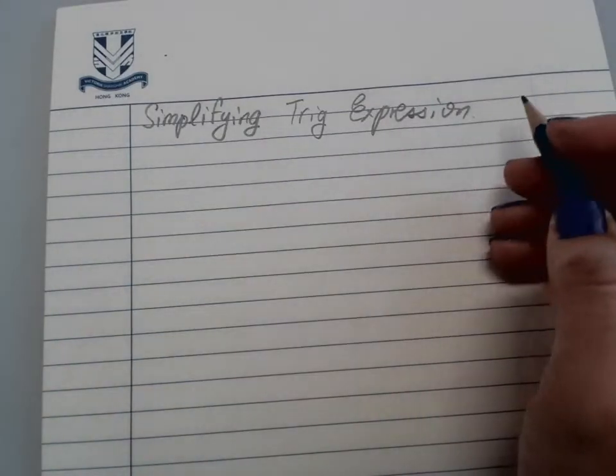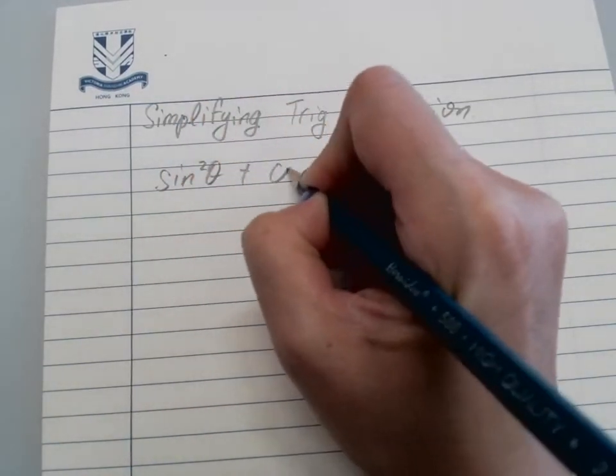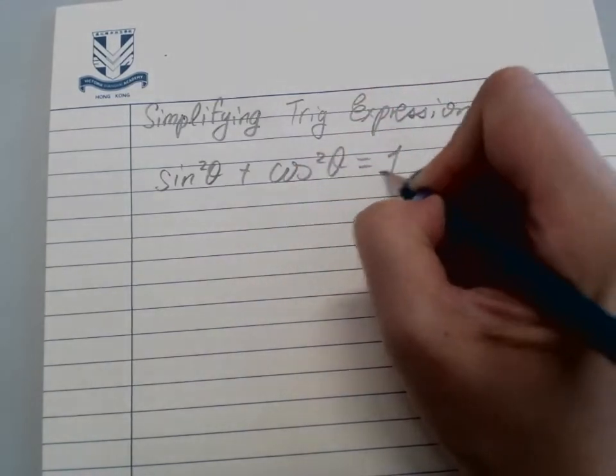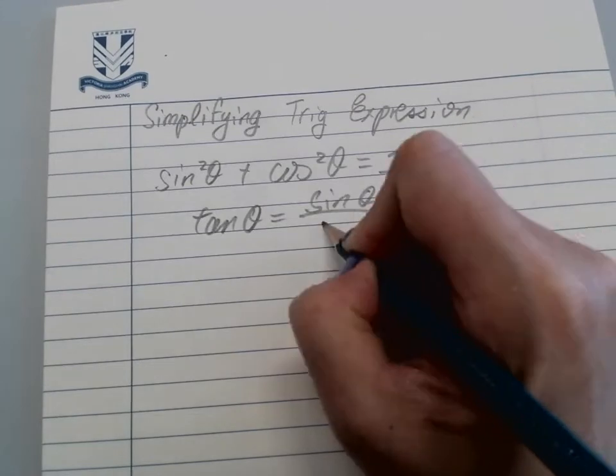Alright, simplifying trig expressions. Be aware that all the information you learned before counts. We always have to remember: sin²θ + cos²θ = 1, and tan θ = sin θ/cos θ.